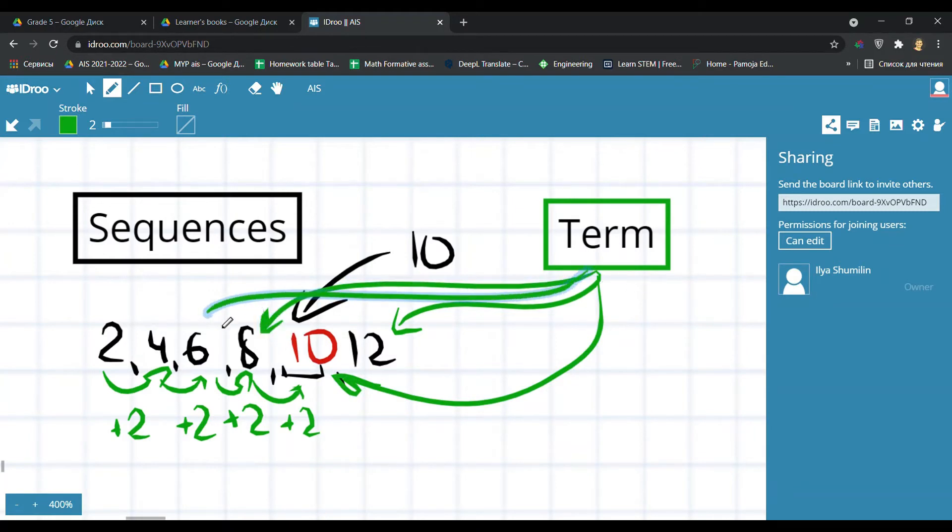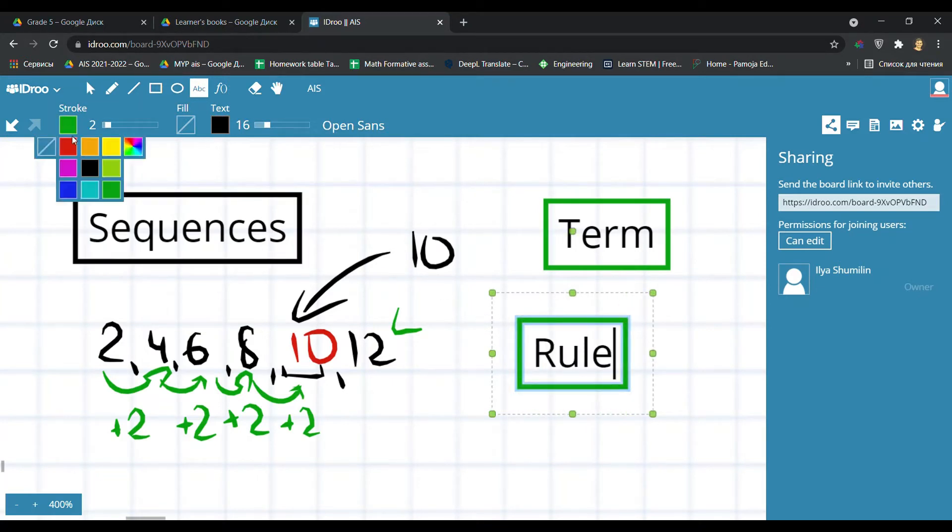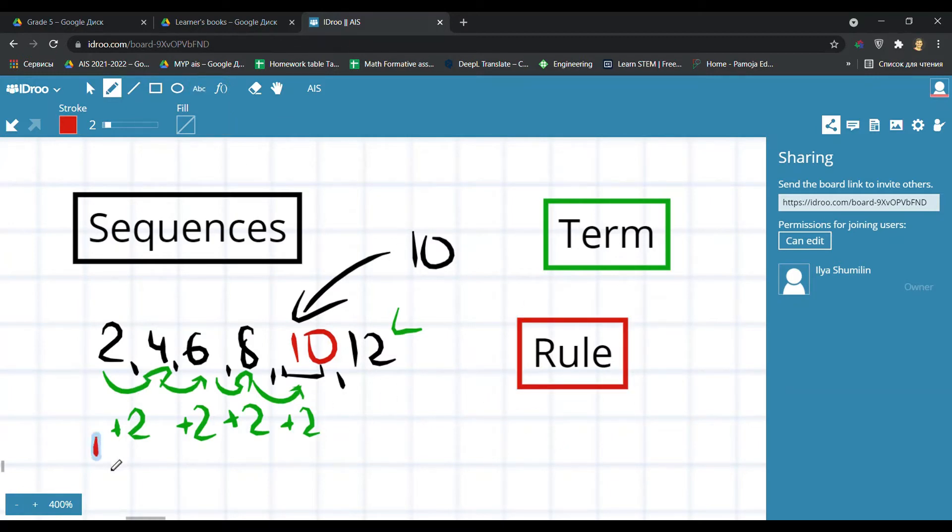6 and 4 and of course 2, these are all terms. But what about the word rule? All right, rule. We always have some rules to make this sequence. What is the main rule of this sequence? We always add 2. The rule is here: add 2.